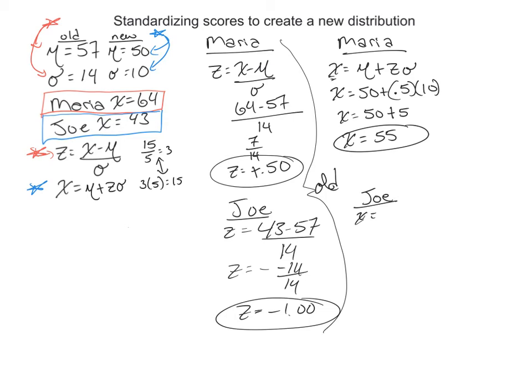So let's do Joe's now. Again, we're going to use this new modified X formula. So mu plus Z times standard deviation. So we have, what's his one? So again, 50 is this new average the professor wants to use, plus, now he had a negative number, negative 1 times 10. So we would go 50 plus negative 10, or 50 minus 10. So Joe's new score is 40.